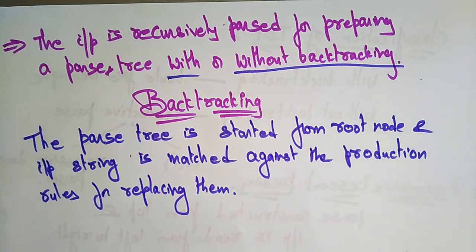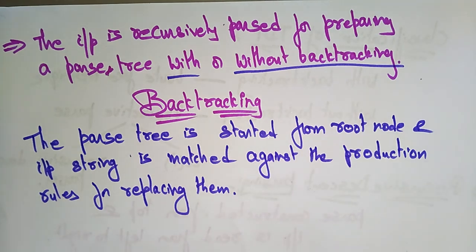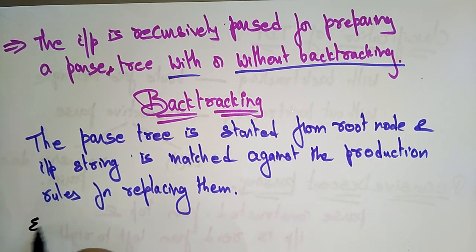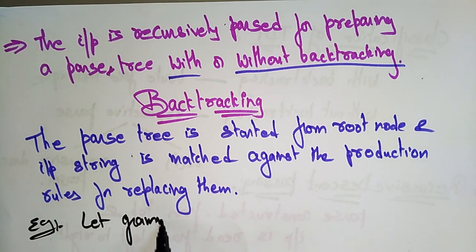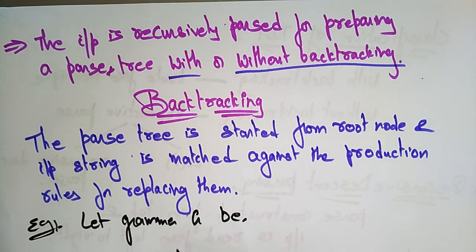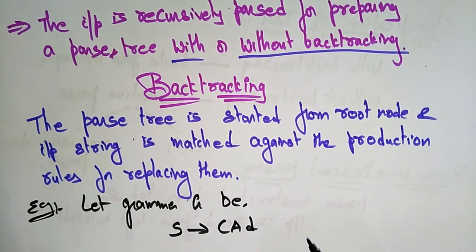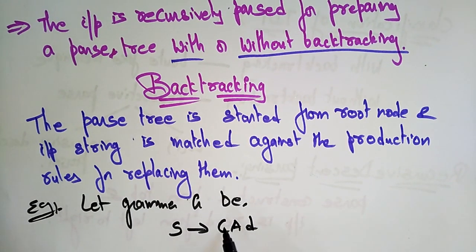Let's see an example to get a clear idea of the backtracking concept used in recursive descent, which is a top-down approach. Let grammar G be: S → cAd, and A → ab | d.